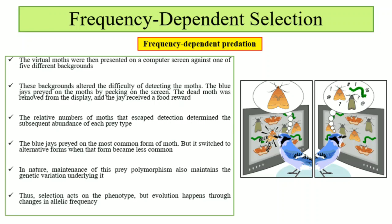The blue jays preyed upon the most common form of moths. When the common form was depleted through successive attempts, the alternative form became less common. In this way, prey polymorphism is maintained in nature, and genetic variation in the prey population is maintained. Selection acts upon the phenotype, but evolution happens through changes in allelic frequency.